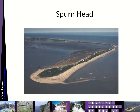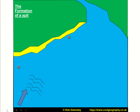Spurn Head on the Holderness Coast is a classic UK example. You can see it's very similar to the previous example — sediment moving along the spit, creating sand bars, with deposition of mud flats on the inside. There's a small settlement there too. It's a very narrow feature that's very vulnerable to winter storms and what's called breaching, where the spit would be broken.